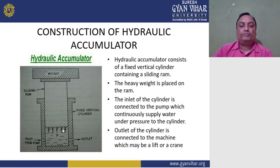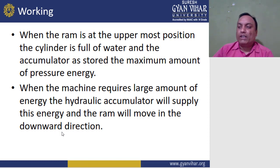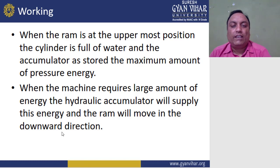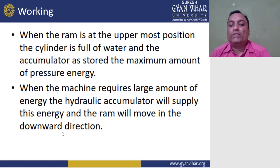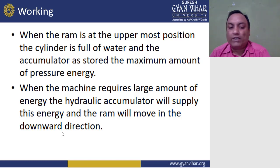When the ram is in the upper extreme position, the cylinder is full of water and the accumulator has stored the maximum amount of pressure energy. When the machine requires a large amount of energy, the hydraulic accumulator supplies this energy and the ram moves in the downward direction.